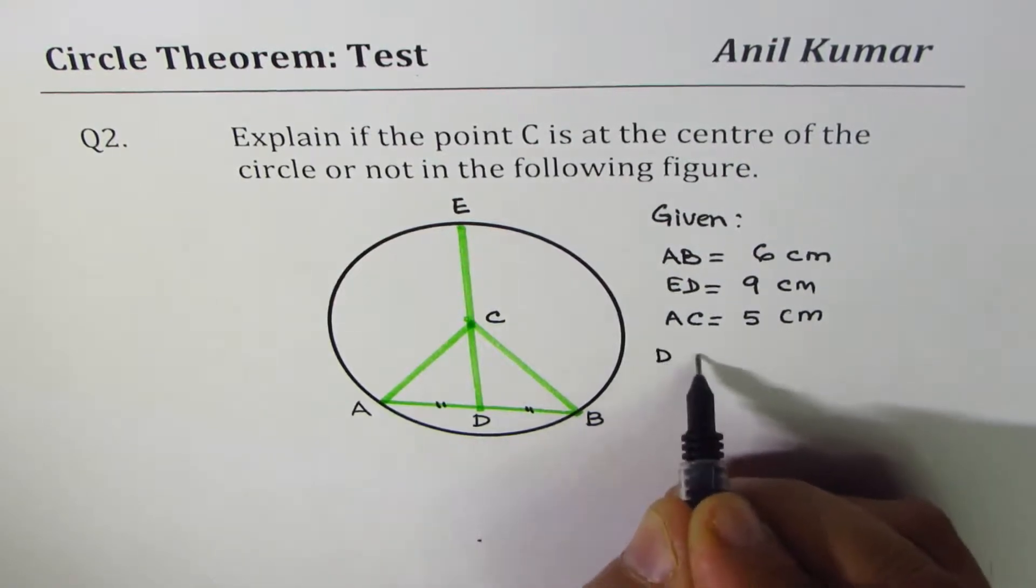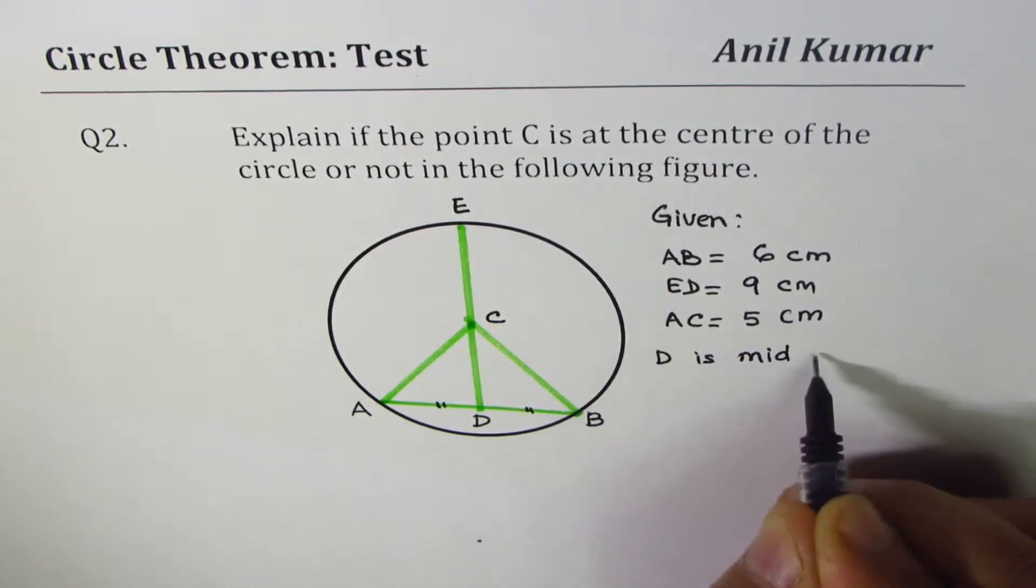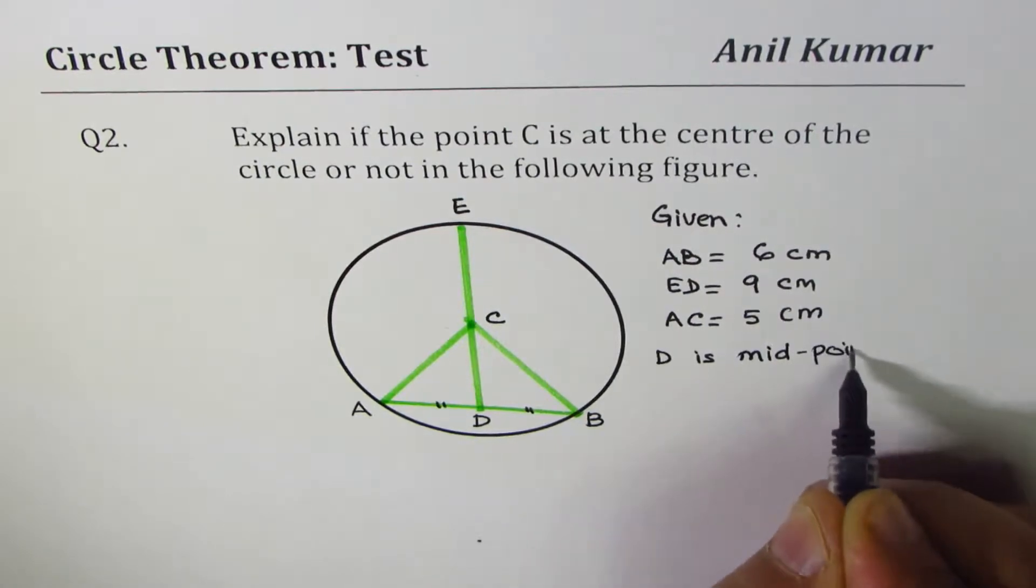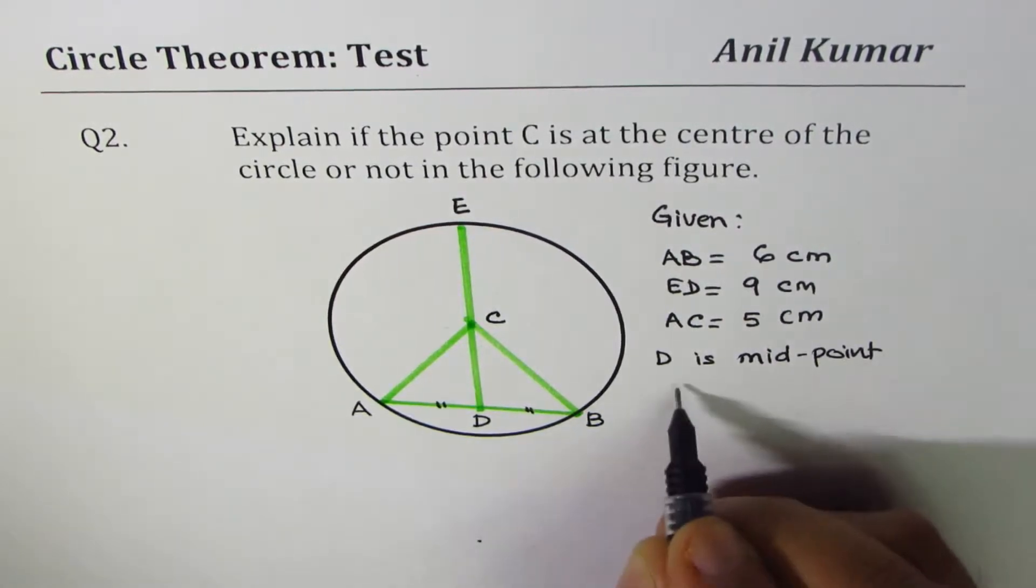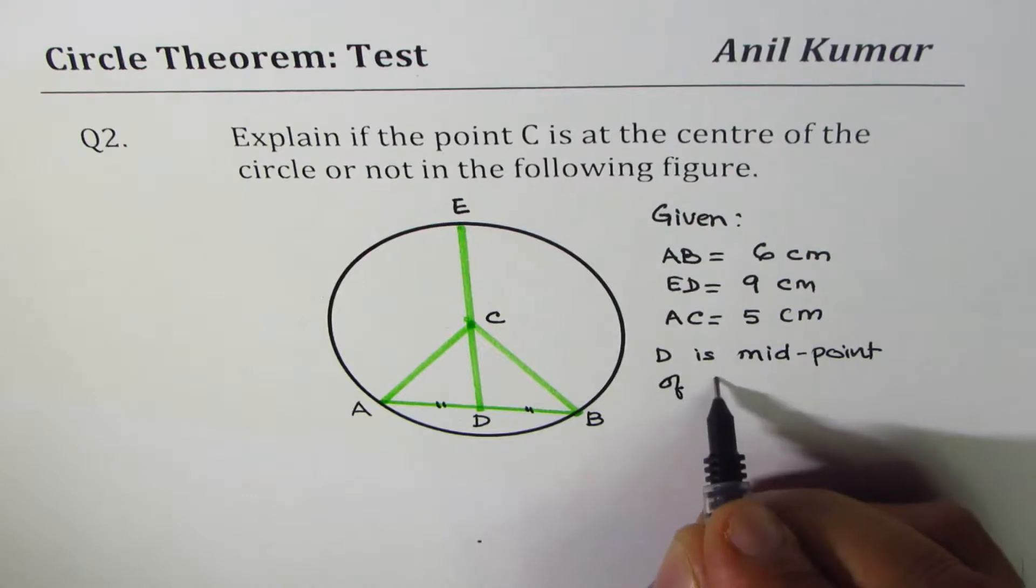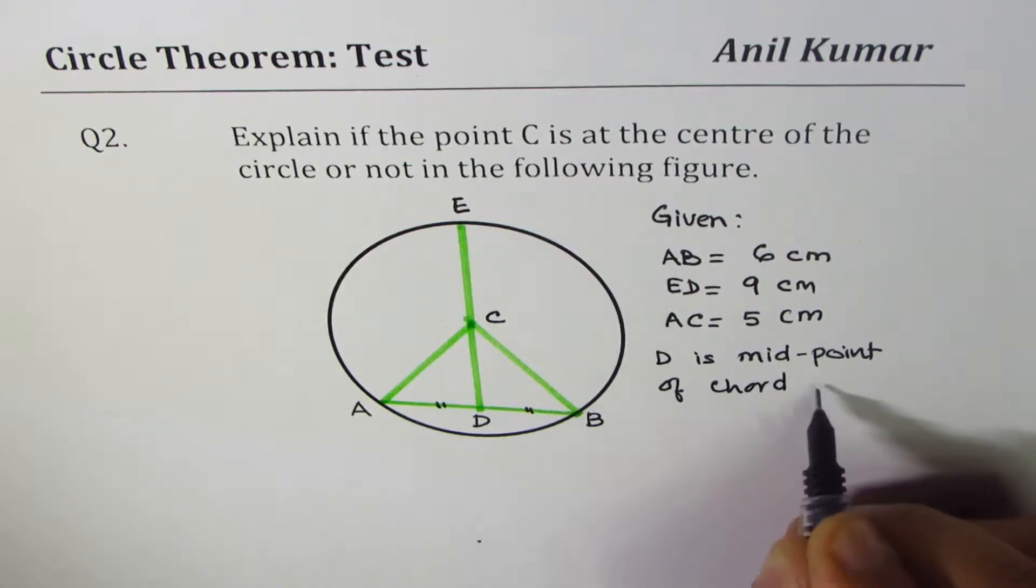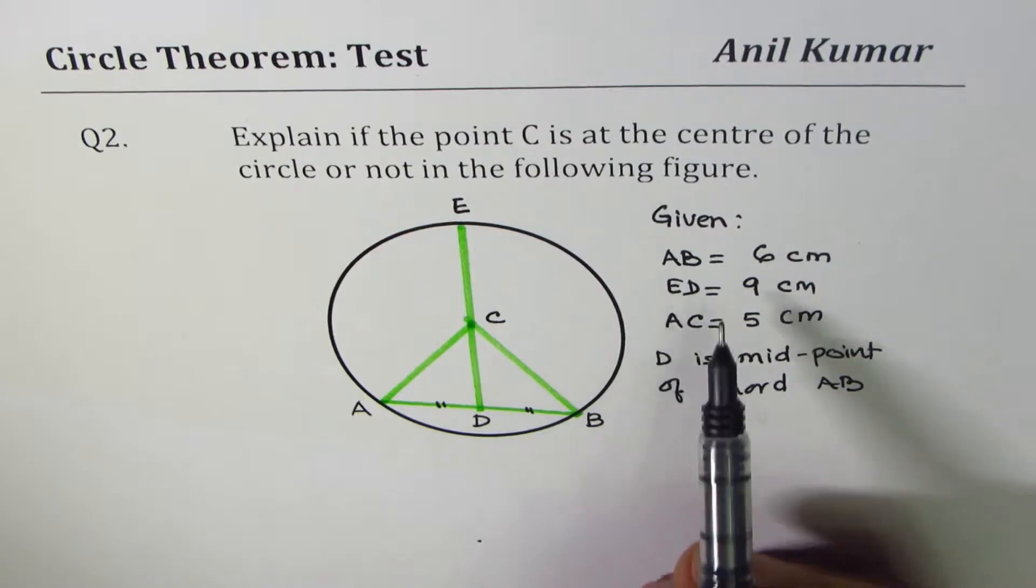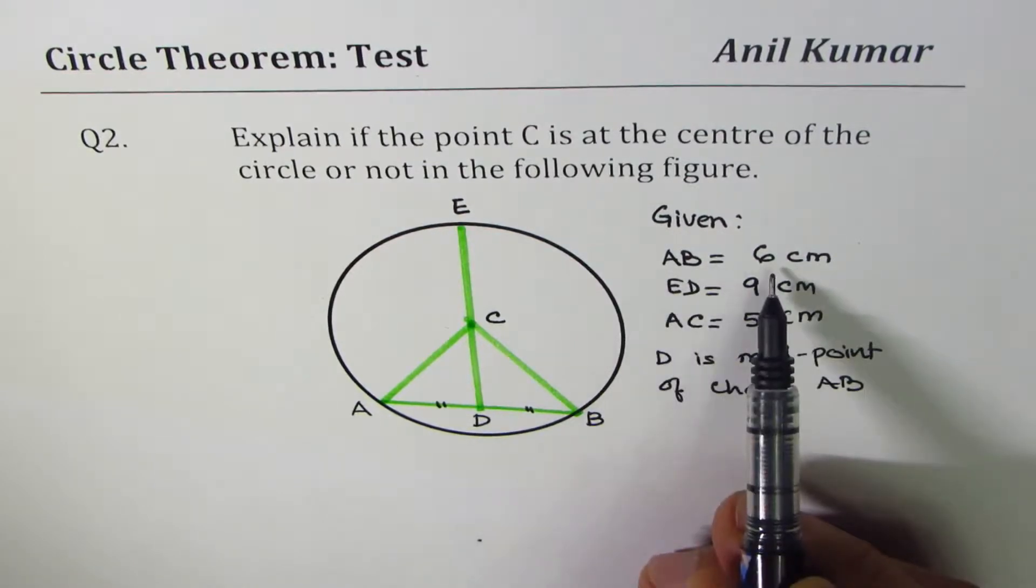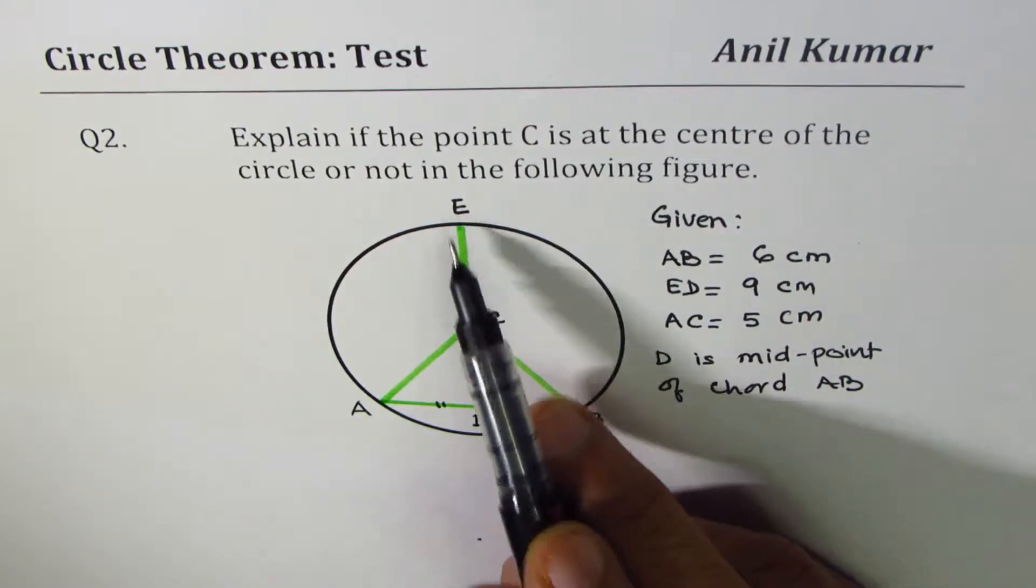Let me write it down. D is midpoint of chord AB. So we are given AB, the length of the chord, as 6 centimeters, E to D, 9 centimeters,